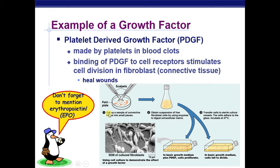Here's a demonstration: if you cut up a sample of connective tissue into small pieces in a petri dish to get a free suspension of fibroblasts and transfer them into sterile culture vessels, in a basic growth medium plus platelet-derived growth factor the cells start to proliferate and fill the container. Without platelet-derived growth factor, in basic growth medium alone, there is no division of those fibroblast cells.